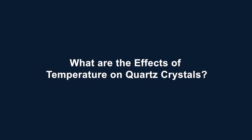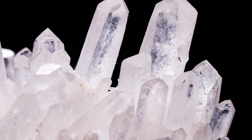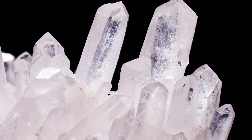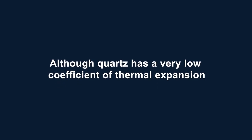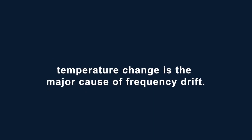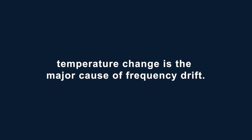What are the effects of temperature on quartz crystals? To answer this question, we first need to understand the physical properties of quartz. Quartz is the second most abundant mineral in the Earth's continental crust. Its crystal structure is a continuous framework of silicon oxygen tetrahedra. The uniform structure makes it possible to be formed into specific geometries that allow it to resonate at very specific frequencies. Although quartz has a very low coefficient of thermal expansion, temperature change is the major cause of frequency drift. The change in frequency comes as temperature variations change the value of the elastic constant and, to a lesser degree, the dimensions of the resonator.